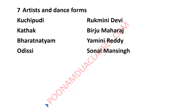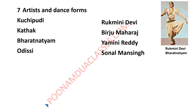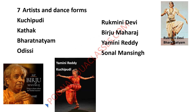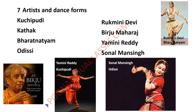Some dance forms and artists were to be matched — Kuchipudi, Kathak, Bharatnatyam, Odissi — and some names were given: Rukmini Devi, Birju Maharaj, Yamini Reddy, and Sonal Maan Singh. Rukmini Devi is the famous Bharatnatyam dancer. Birju Maharaj, who recently passed away, was the very popular Kathak dancer and trainer. Yamini Reddy is very popular for Kuchipudi, and Sonal Maan Singh for Odissi.